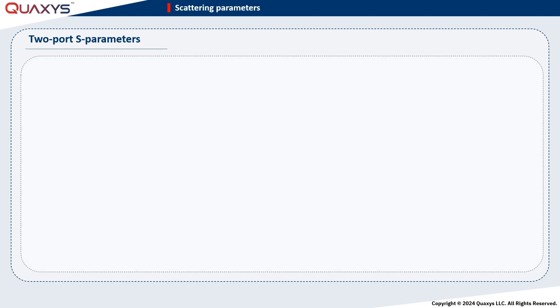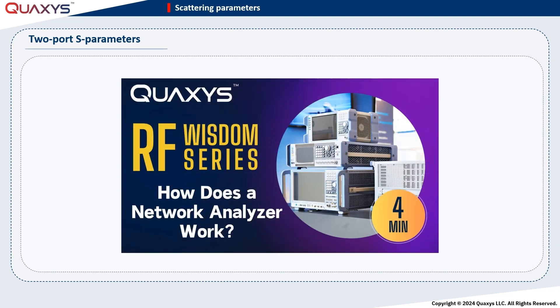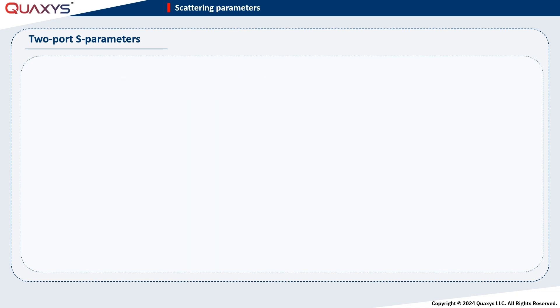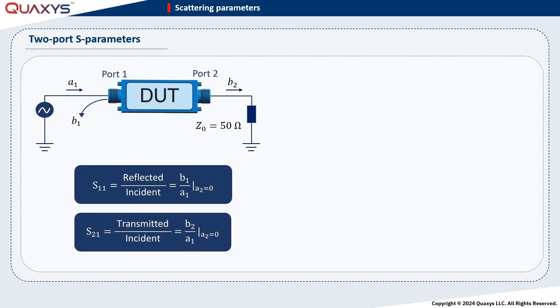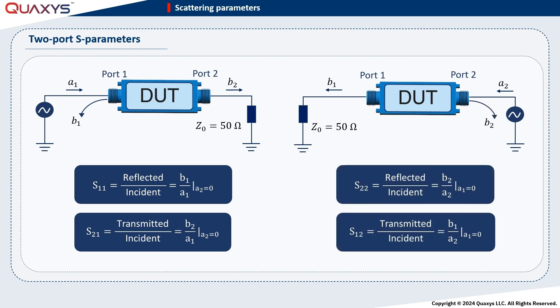Let's delve deeper into the process of measuring the S-parameters of a 2-port device. Check out this video showcasing how a network analyzer conducts S-parameter measurements. In the presented scenario, the incident wave on port 1 carries the amplitude A-1. A portion of this wave reflects from port 1, denoted as B-1, while the remaining portion transmits to port 2, represented by the amplitude B-2. The S-parameters S-1-1 and S-2-1 are defined as follows. Now, our focus shifts to measuring S-2-2 and S-1-2. To accomplish this, we excite port 2 while terminating port 1 with its characteristic impedance.